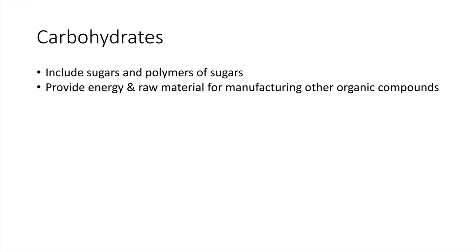Starting off with carbohydrates. Carbohydrates include the sugars and polymers that are built from sugars. In our bodies, carbohydrates provide energy — a quick source of energy — and they also provide raw material. They provide carbon atoms, hydrogen atoms, and other things needed for our bodies to build up other sorts of molecules. So they provide energy and they provide raw materials.